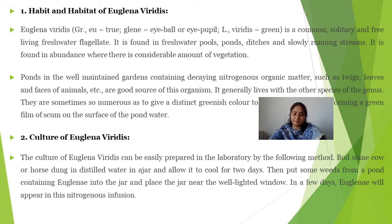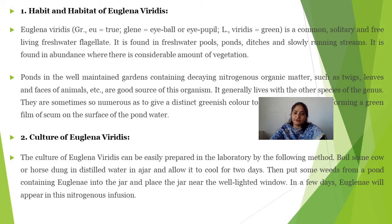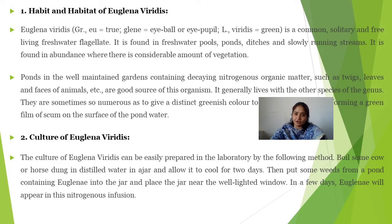Euglena is related to Protozoa and is classified based on its locomotory organelles. The phylum is Sarcomastigophora, the class is Mastigophora, and the subclass is Phytomastigophora. Phyto stands for chloroplast, meaning chloroplast is present, enabling photosynthesis. Mastig is related to locomotion via flagella.